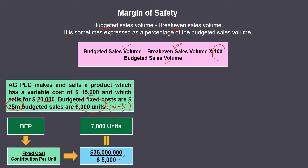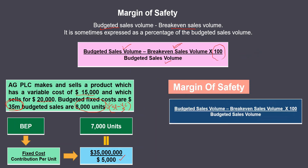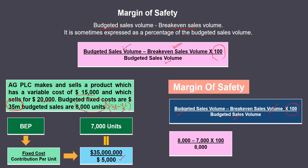We've now calculated the breakeven sales volume as 7,000 units. Now let's calculate the margin of safety. Margin of safety equals budgeted sales volume minus breakeven sales volume, divided by budgeted sales volume, times 100. That gives us: (8,000 minus 7,000) divided by 8,000, times 100, which equals 12.5 percent.